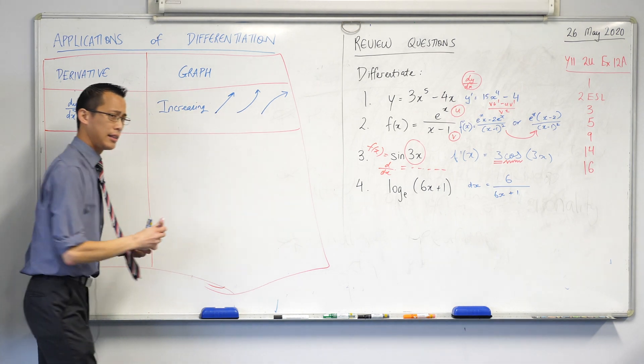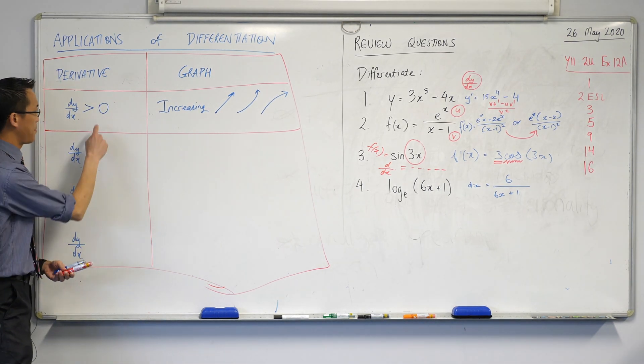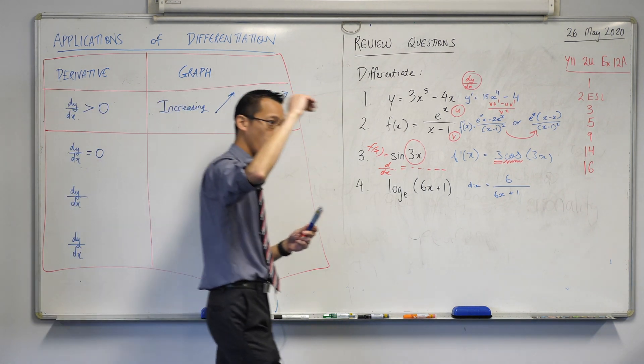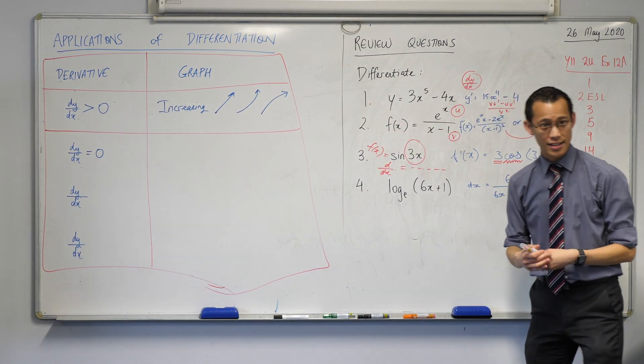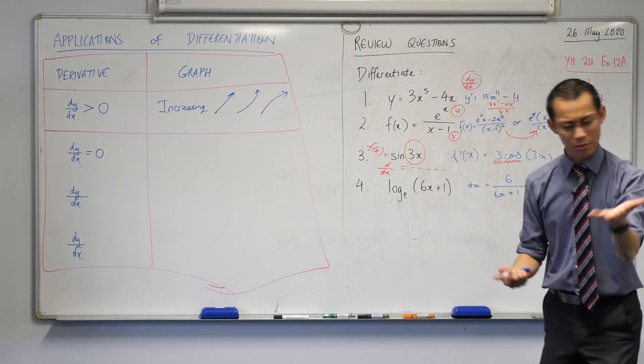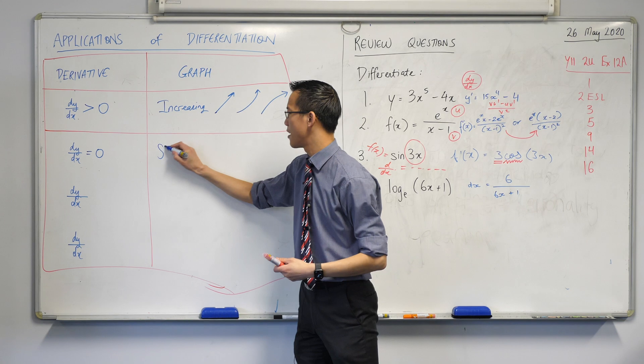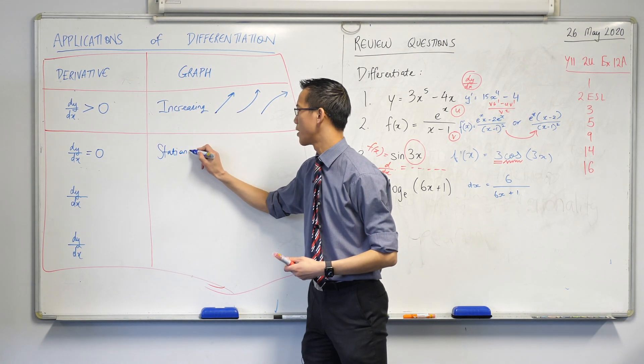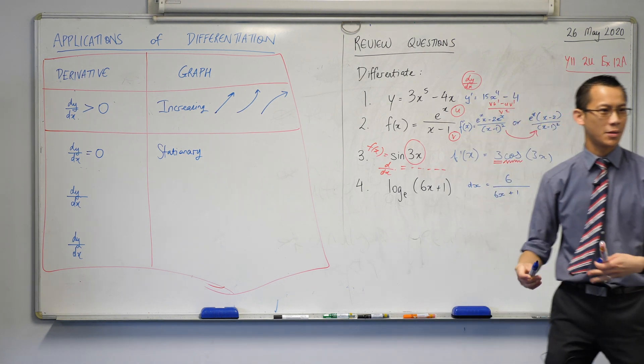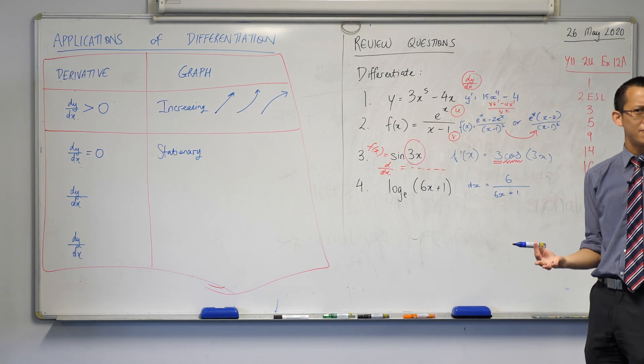Let's keep on going down. What happens if it's not positive, what if it was equal to zero? We actually have a special word for this. We use the word stationary. Stationary by the way, it's stationary with an A. Stationary with an A is the stuff I'm holding in my hands. How would you describe that in words?